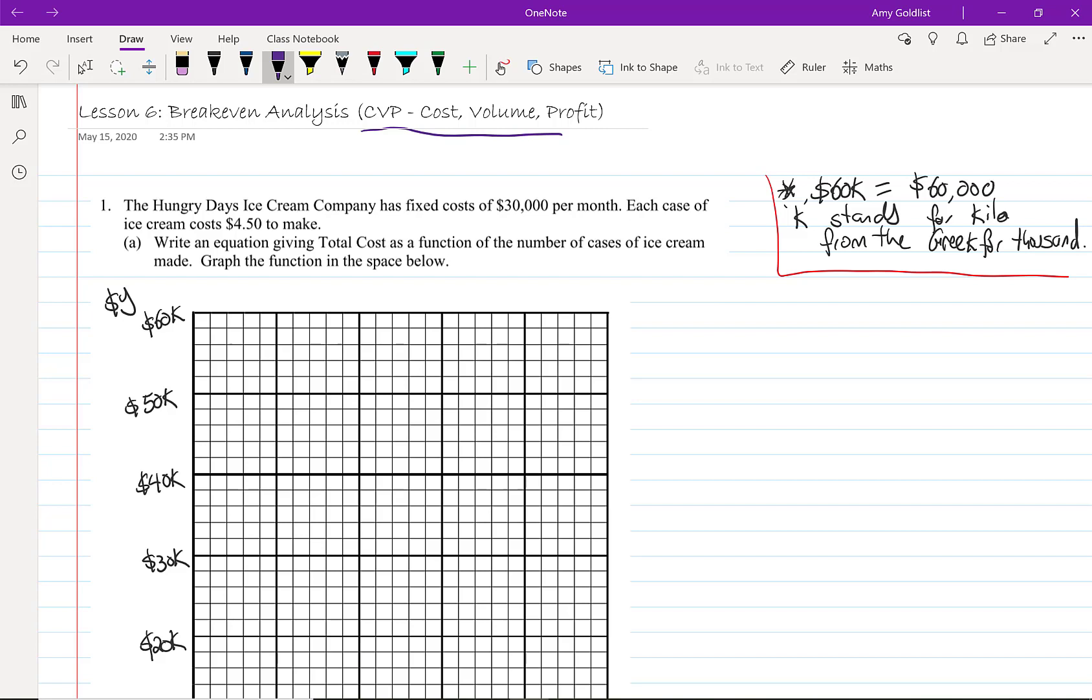The Hungry Days Ice Cream Company has fixed costs of $30,000 per month. Each case of ice cream costs $4.50 to make. Write an equation giving total cost as a function of the number of cases of ice cream made. We're gonna graph that in the space below.